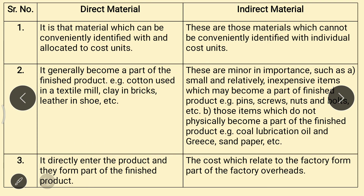Difference between direct material and indirect material. First point: for direct material, it is material which can be conveniently identified with and allocated to cost units. In case of indirect material, these are those materials which cannot be conveniently identified with individual cost units.